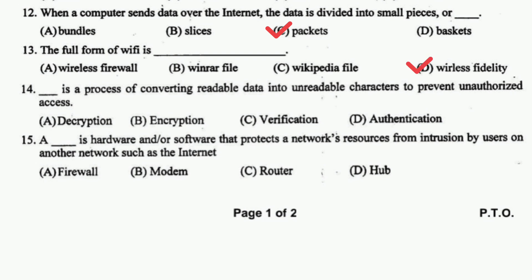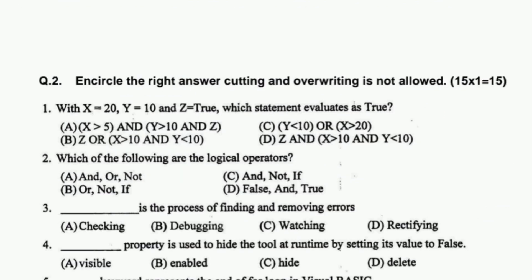The process of converting readable data into unreadable characters to prevent unauthorized access is called encryption. A firewall is hardware and/or software that protects network resources from intrusion by users on another network, such as the internet.